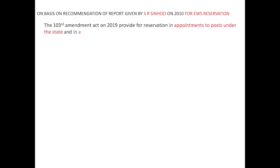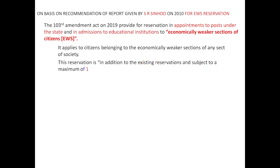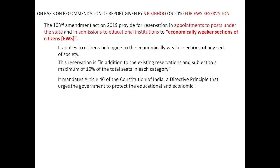The 103rd Amendment Act of 2019 provided for reservation in appointments to jobs and in admissions to educational institutions for economically weaker sections of citizens. It applies to citizens belonging to the economically weaker sections of any section of society. This reservation is in addition to the existing reservations and is subject to a maximum of 10% of total seats in each category. It mandates Article 46 of the Constitution — the DPSP — that the government should protect the educational and economic interests of the weaker sections.